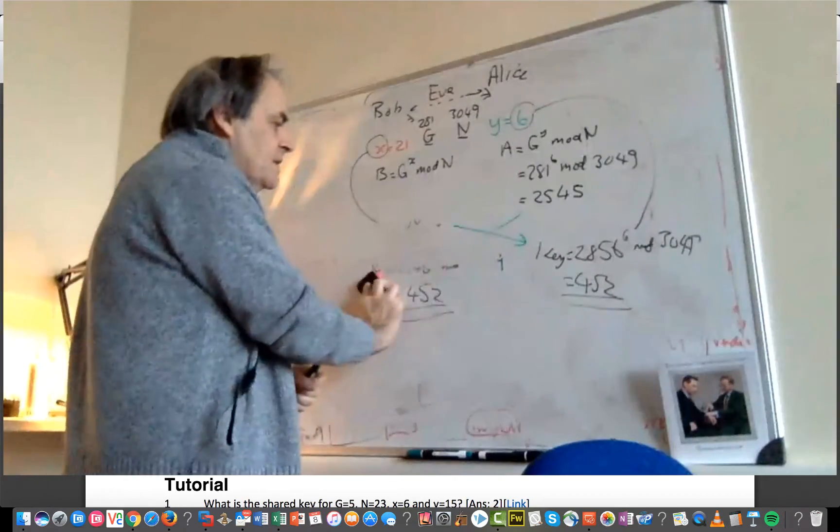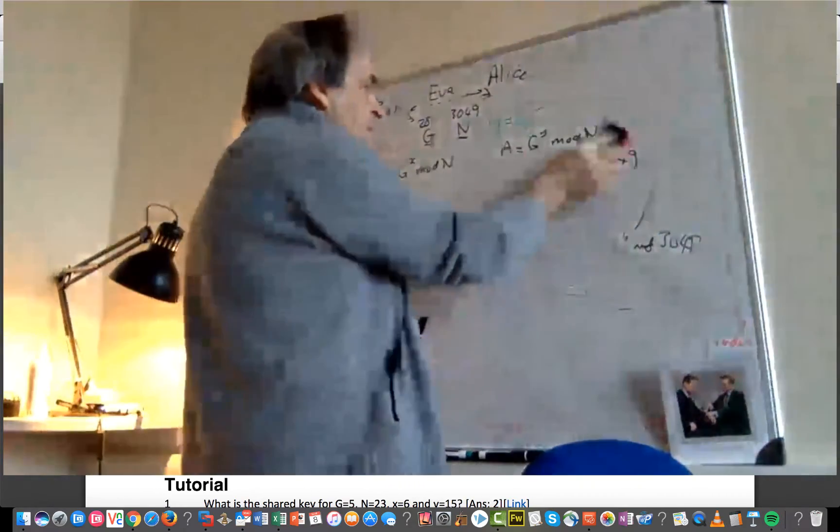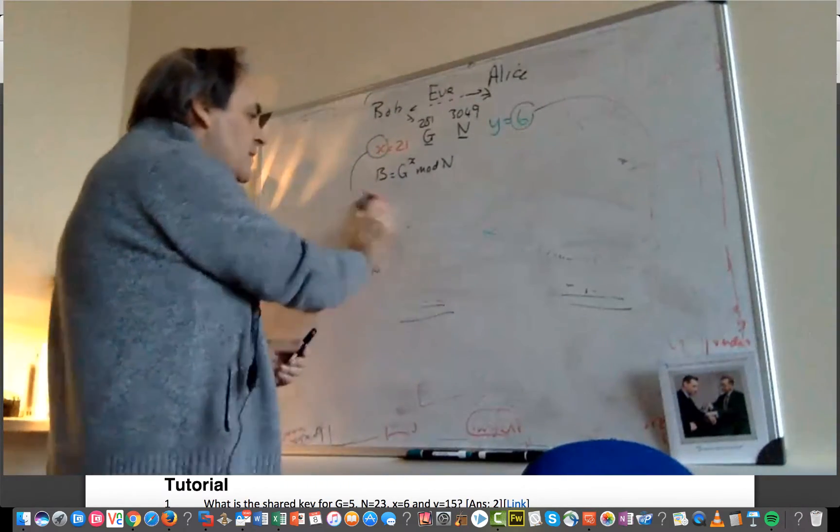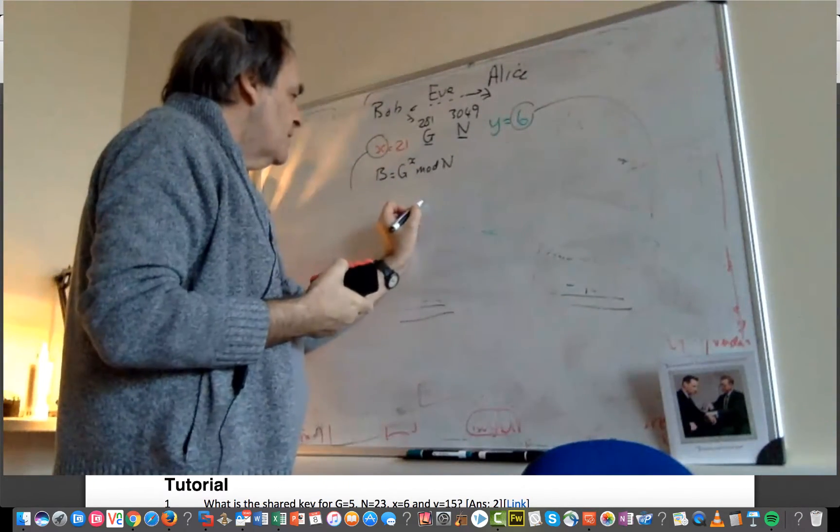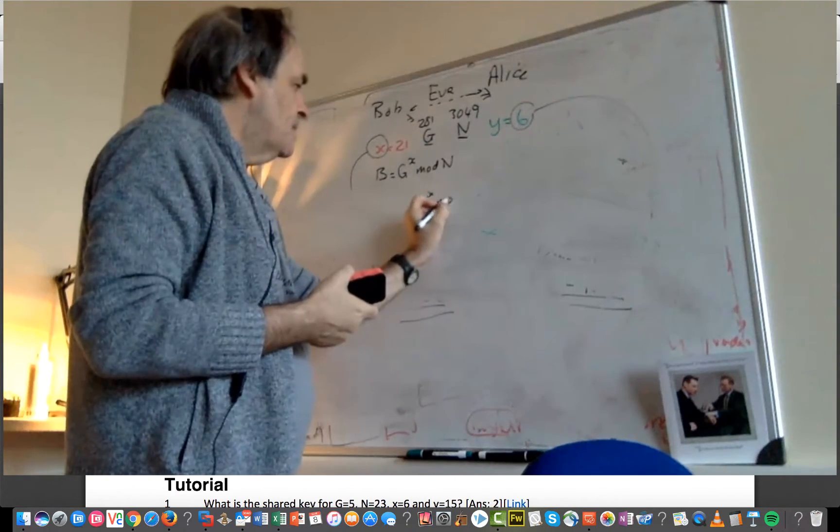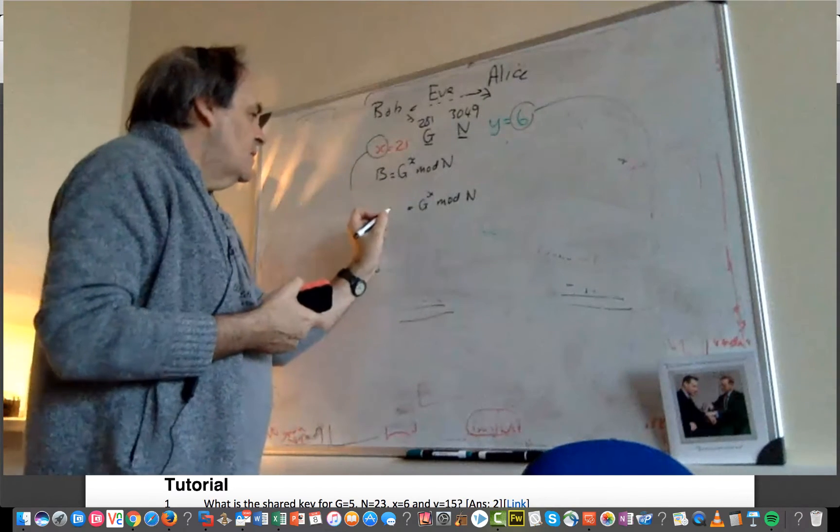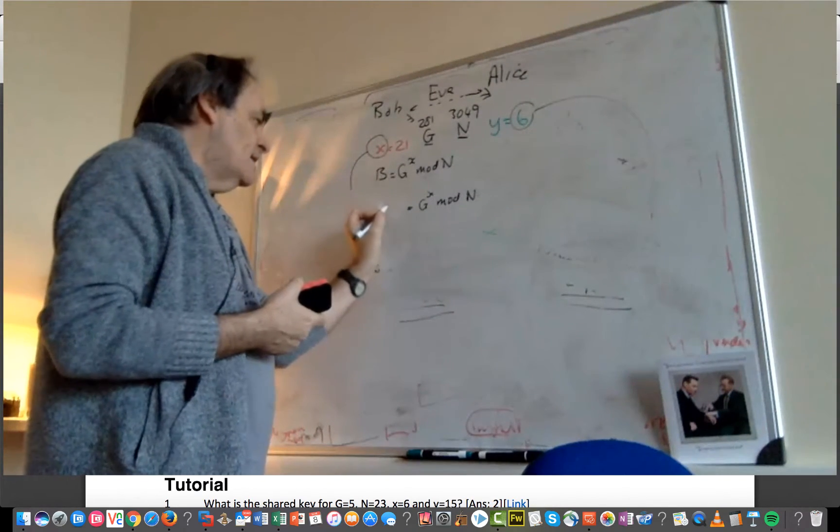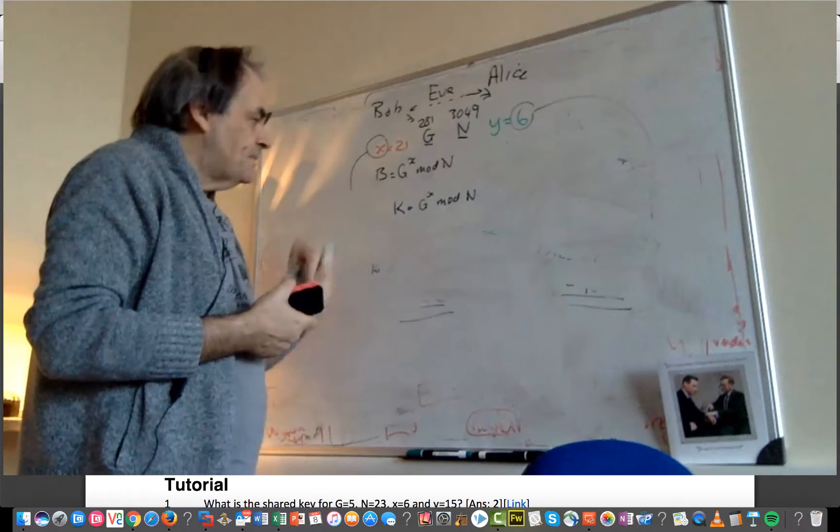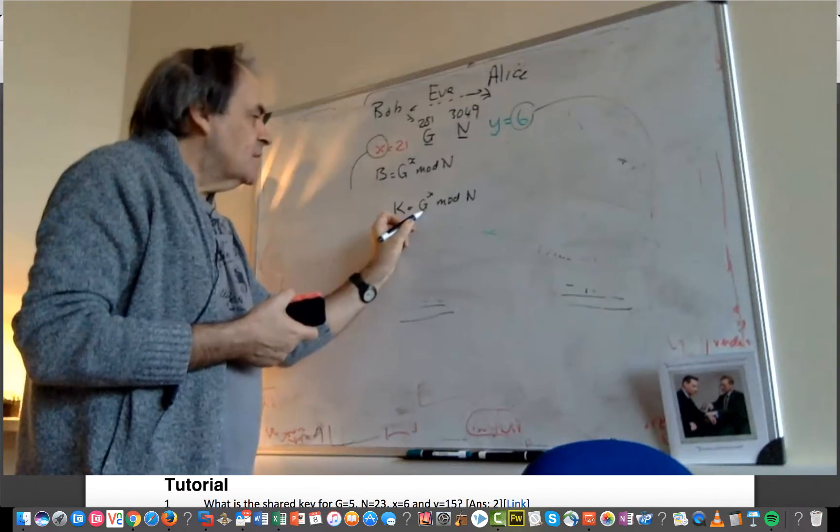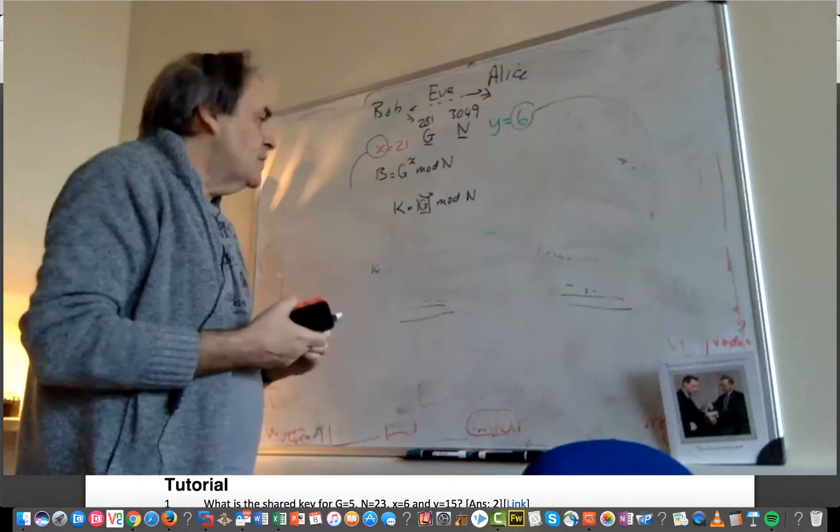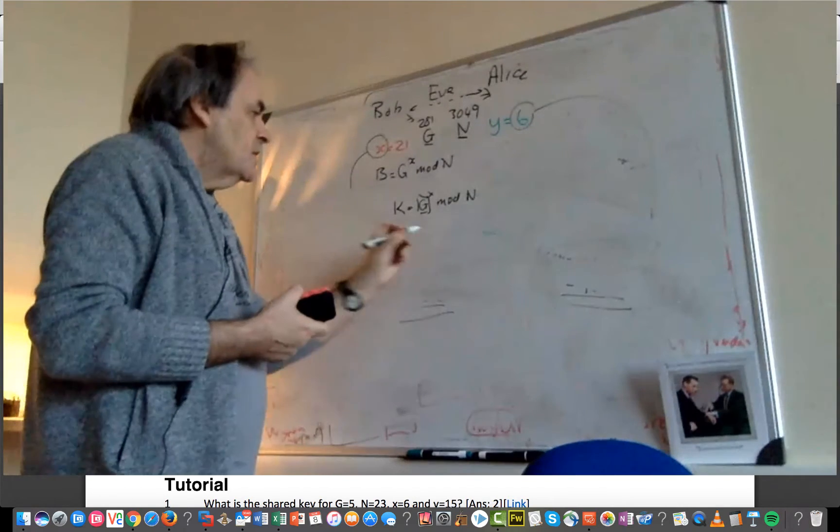And the value of G is important, because we need to make sure that for every value of G that we pick, for our X value up to N, we always get a different value here.